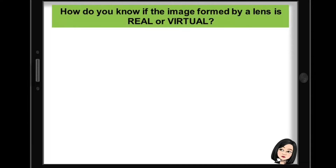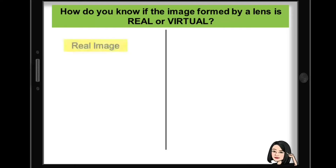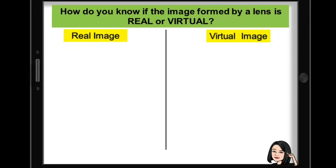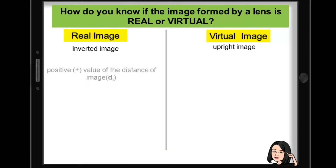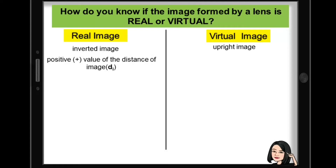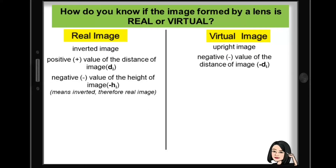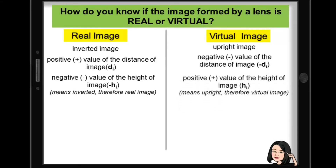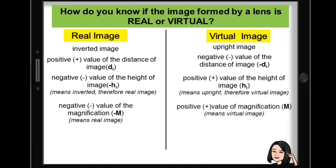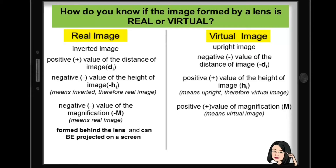How do you know if the image formed by a lens is real or virtual? The image is real if it is inverted, and virtual if it is upright. A positive value of the distance of image means it's real; a negative value means it's virtual. A real image has a negative value of the height of image, and a positive value for virtual. A negative value of magnification means real; a positive value means virtual. Real image is formed behind the lens and can be projected on a screen, while virtual image is formed in front of a lens and cannot be projected on a screen.